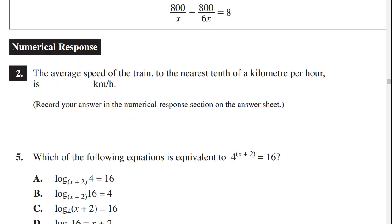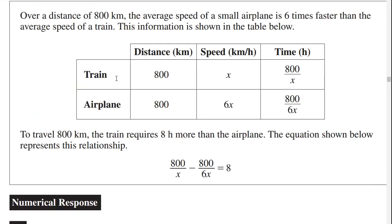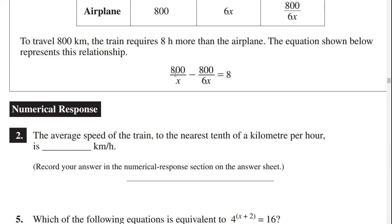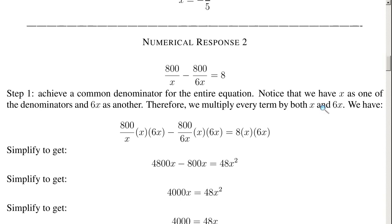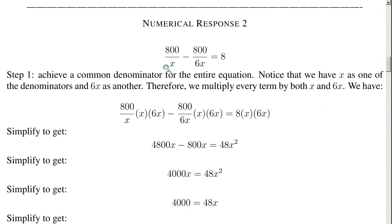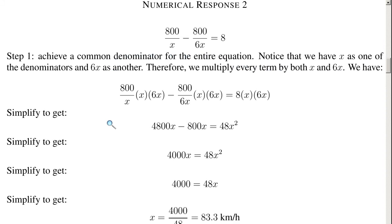The question asks for the average speed of the train to the nearest tenth of a kilometer per hour. The average speed of the train is defined as x. So all we have to do is solve for x using this equation. 800 over x minus 800 over 6x equals 8. Step 1: achieve a common denominator for the entire equation — we multiply every term by both x and 6x: 800/x times 6x² minus 800/6x times 6x² equals 8 times 6x².